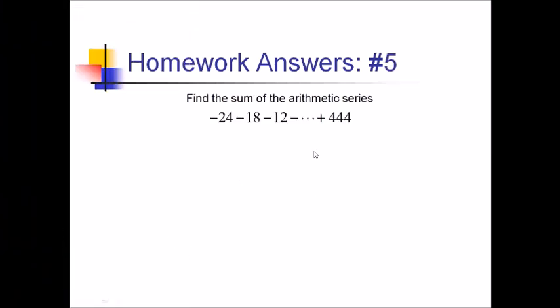For number 5, we want the sum of this arithmetic series. Our general formula is n times T1 plus Tn over 2. We know T1, it's negative 24. Tn is 444, but we don't actually know the number of terms, n. So to find this, I'm going to use my arithmetic sequence formula.